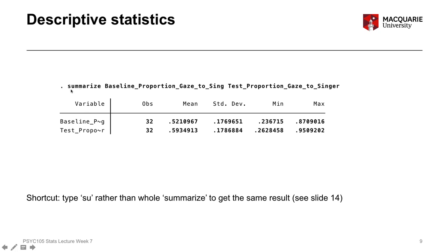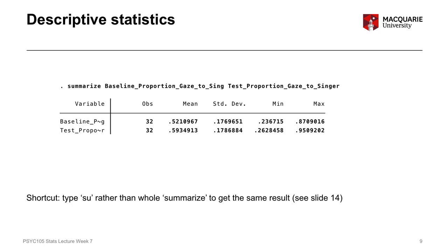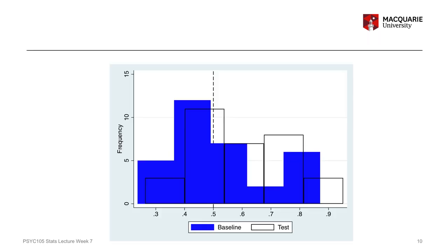As a shortcut: when typing commands in Stata using the command line, instead of writing the full word 'summarize' you can just type 'su' and get the exact same output. That shortcut will be shown on slide 14. The next thing we want to look at is a histogram for both variables to compare their distributions — a graphical representation of what we examined numerically.